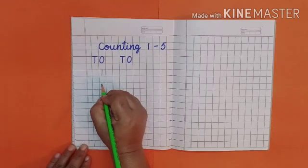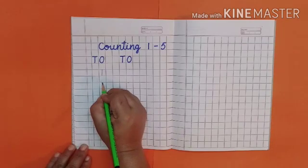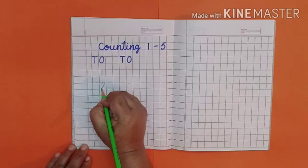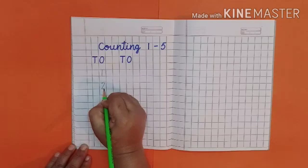This is number one. For two, put your pencil on dot. Move your pencil slightly upward and come down by making left curve, and then make sleeping line on the line.